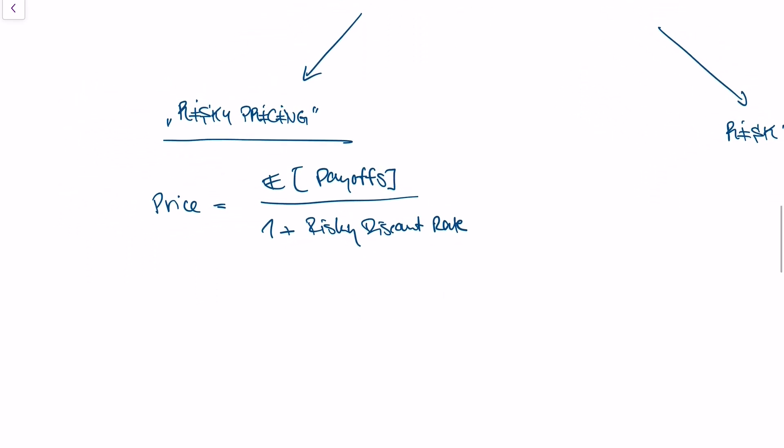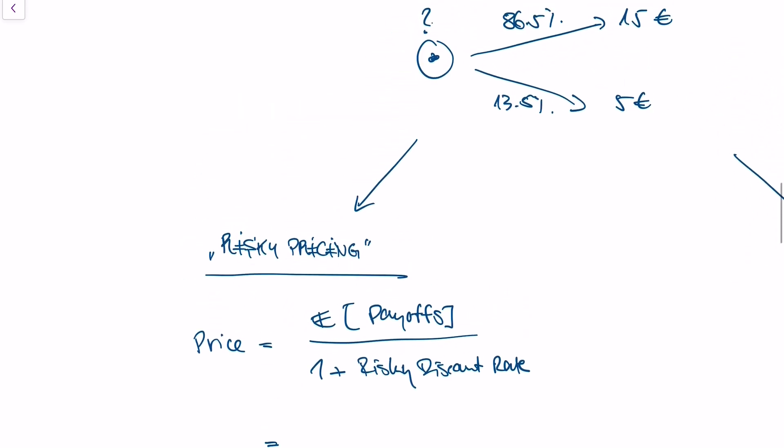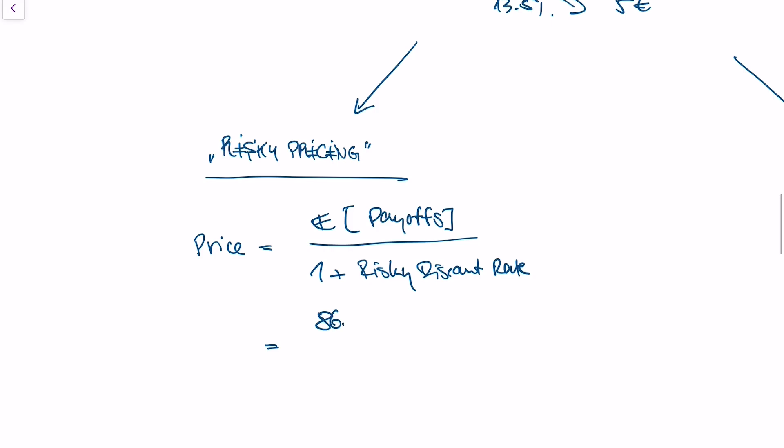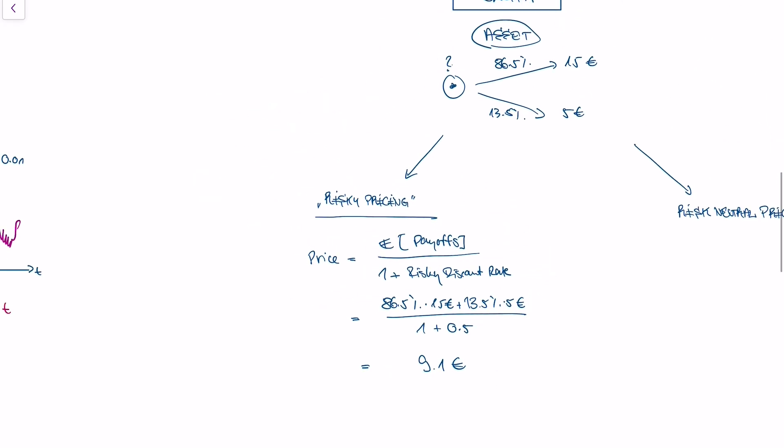Let's try to price our asset using this formula. The expected value of our payoffs is 86.5% times 15 euros, plus 13.5% times 5 euros, and our risky discount rate is taken as 0.5. With this formula, we get a result of 9.1 euros. That's the price of our claim via the approach of risky pricing.